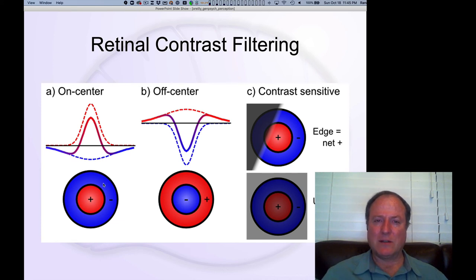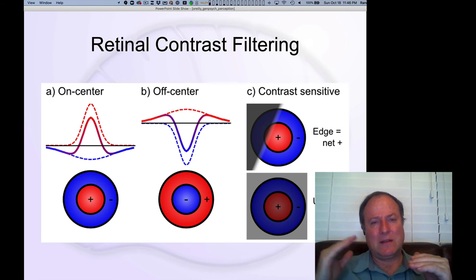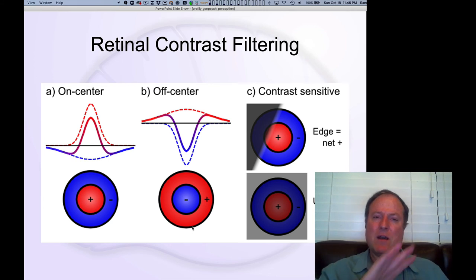This is the principle of contrast, as we've said many times. The visual system is really, really sensitive to contrast. Here we can see that in fact this sensitivity to differences is actually a critical element in compressing the visual scene.